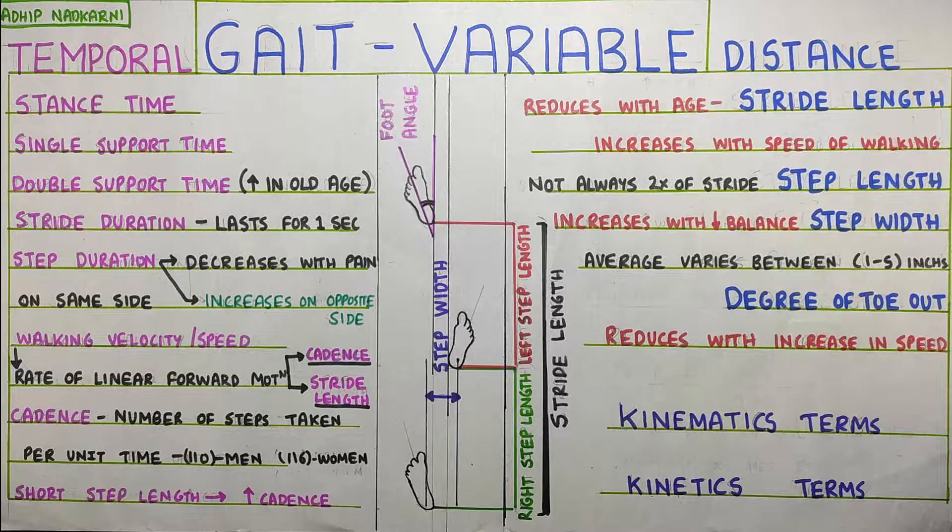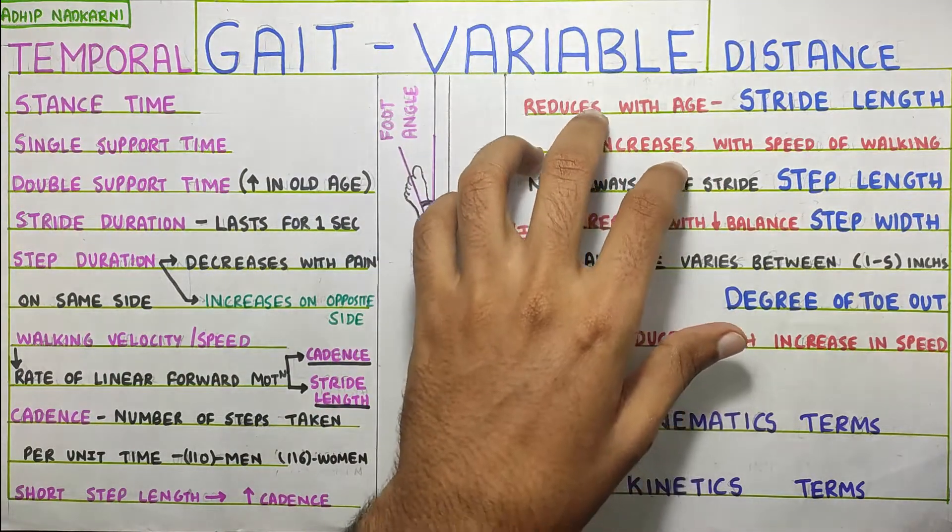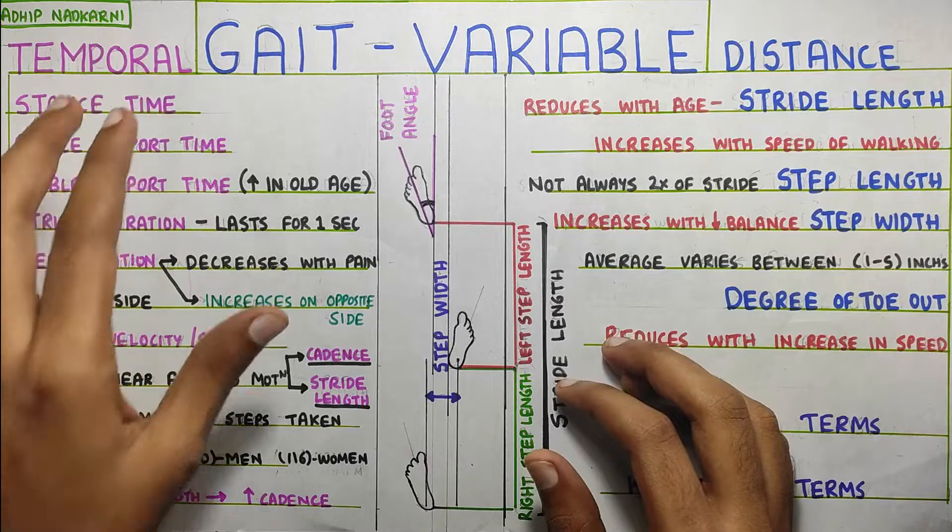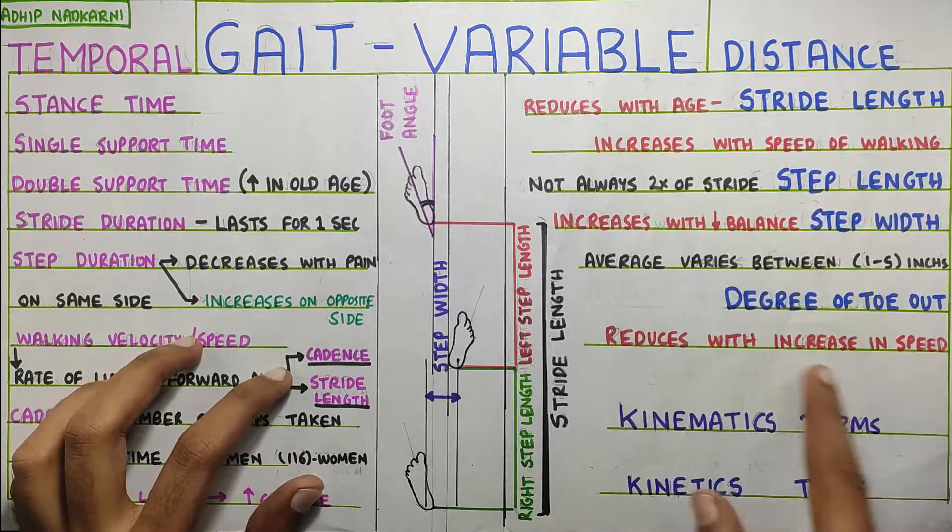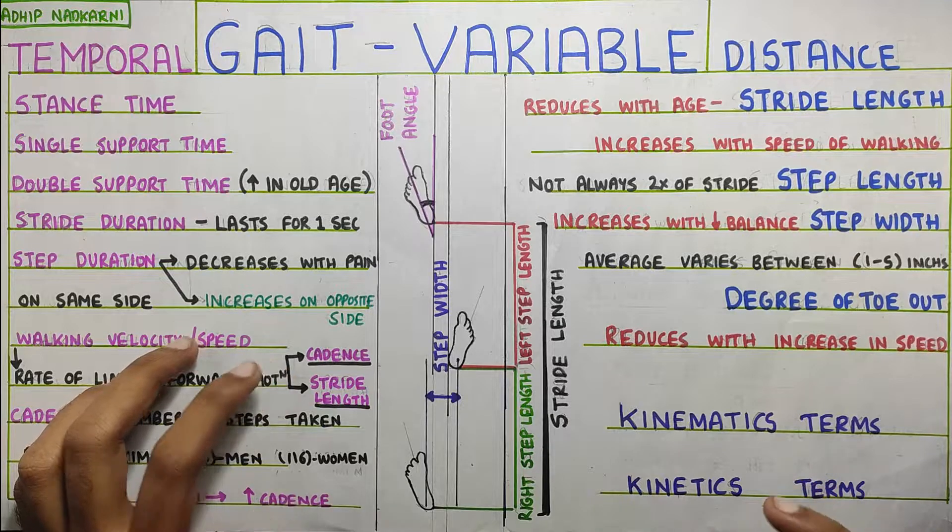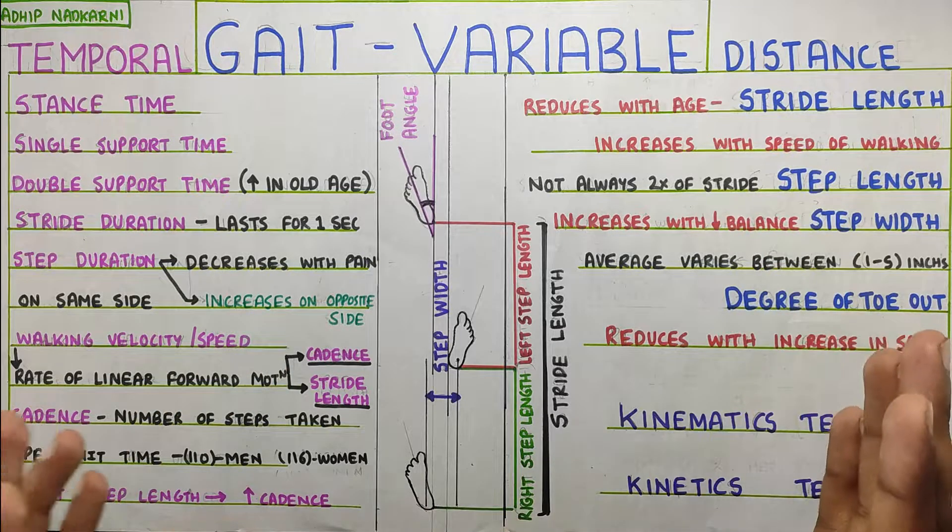In this video, we are going to talk about the gait variables. We will discuss about the temporal variables that is the time and then distance. We will also mention the kinematics and kinetics terms. What are those? So let's start with the topic.